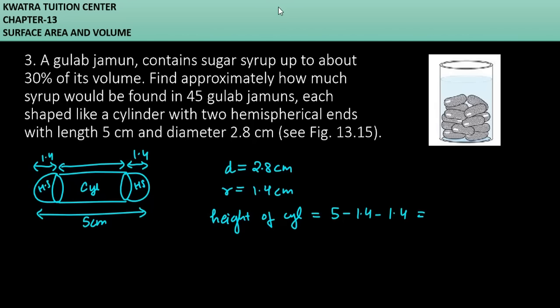So both of them, we have to remove this part. What will be left from 5? It will be 2.2 cm. Now we have to find the total volume of at least one gulab jamun. So we have to find the volume of cylinder. It will be πr²h.